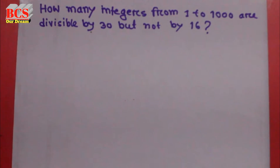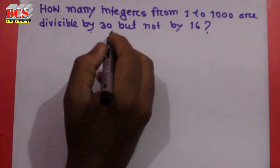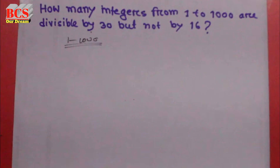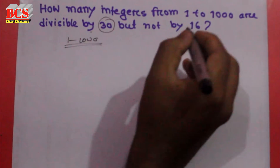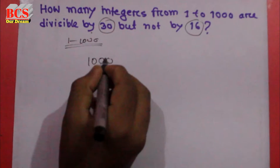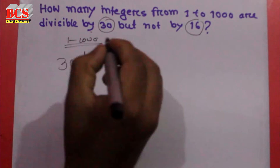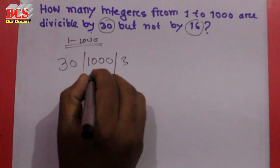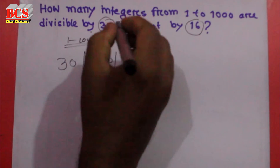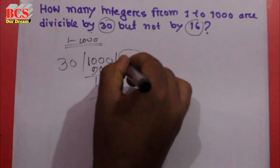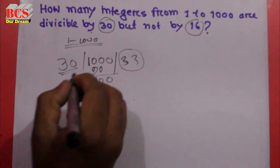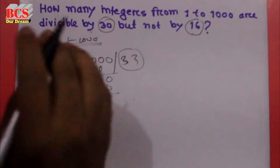How many integers from 1 to 1000 are divisible by 30 but not 16? We need to find integers from 1 to 1000 that are divisible by 30.